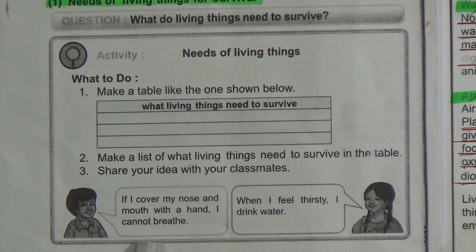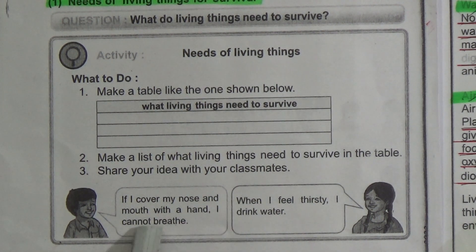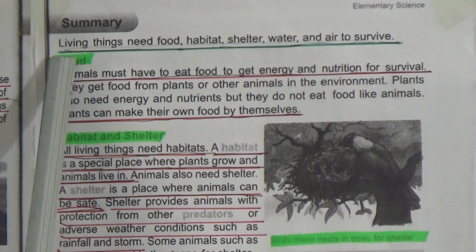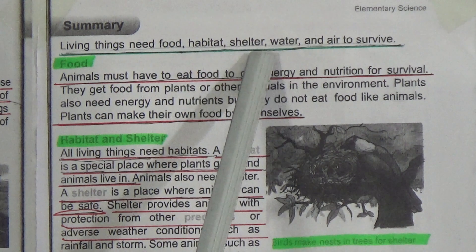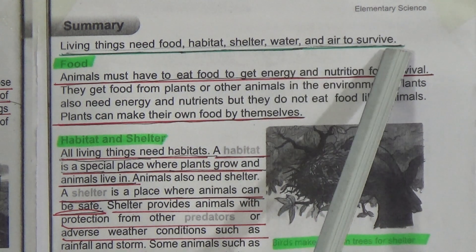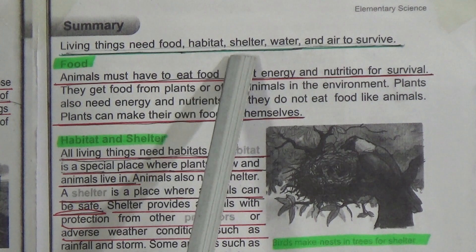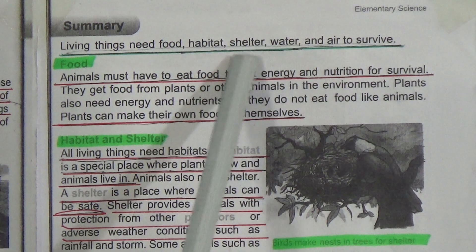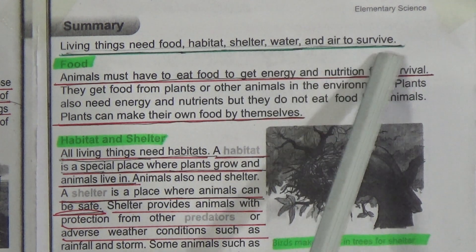This boy says: if I cover my nose and mouth with a hand, I cannot breathe. And she says: when I feel thirsty, I drink water. Summary: Living things need food, habitat, shelter, water and air to survive. Underline this line.